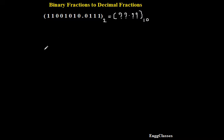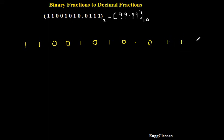So let me write the number one more time so that we'll start with the conversion process. This is 1 1 0 0 1 0 1 0 — this is the integer part. At the fraction part we have a point, and here we have 0 1 1 1. I've written the same number with enough space so that I can add up its equivalent decimal values and sum everything up.